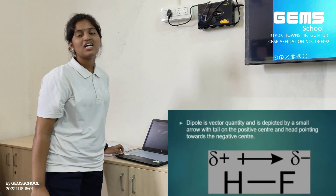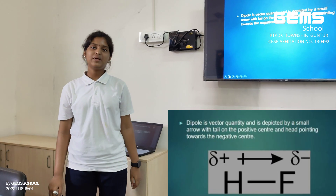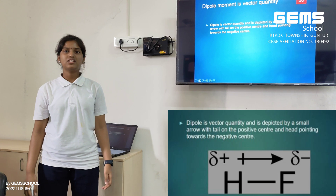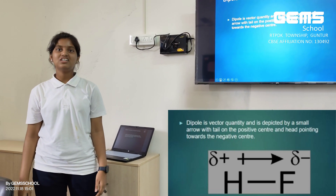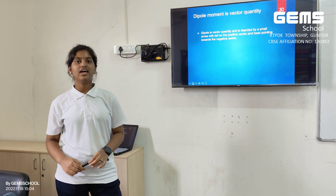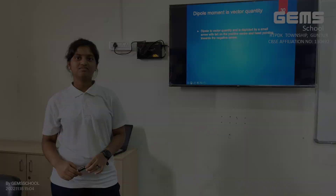Dipole moment is a vector quantity and is depicted by a small arrow with its tail pointed towards the positive center and its head towards the negative center.